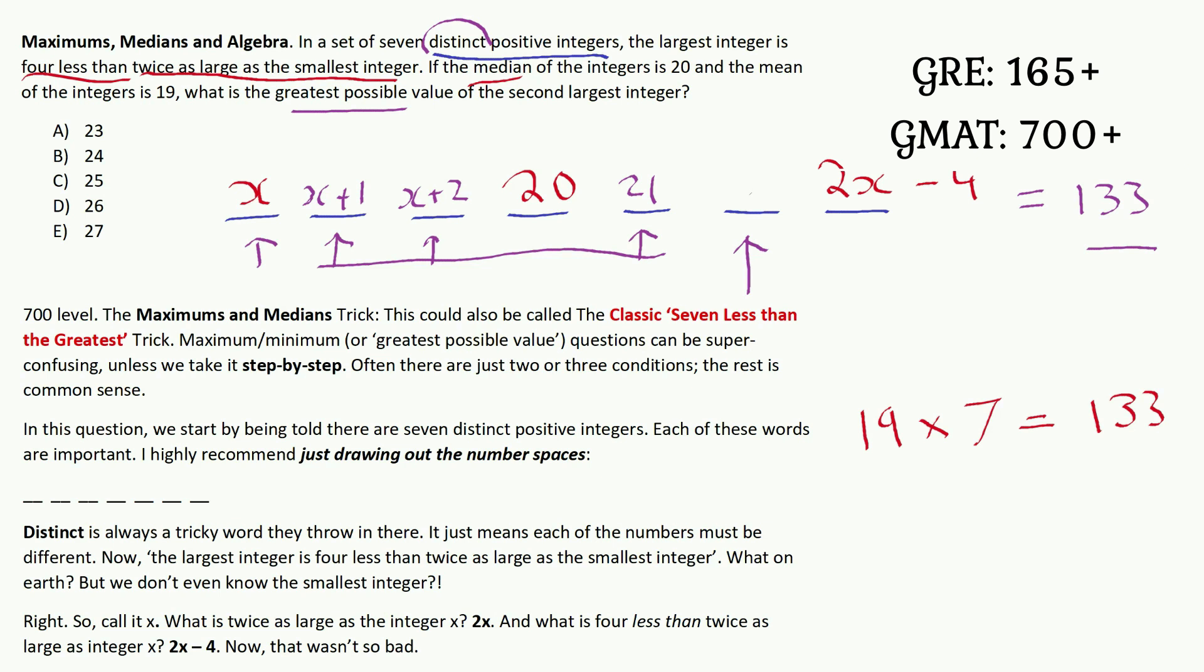What's the biggest value that this second largest integer could be? It's quite tough. The biggest value that he or she could be is one less than the largest integer. If the largest integer is 2x minus 4, one less than that is 2x minus 5. If this second largest integer was any bigger, he would become the largest integer. So we've got to make it just one smaller. We can't make it the same, because the numbers are distinct.